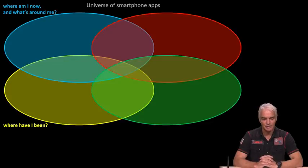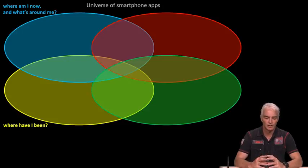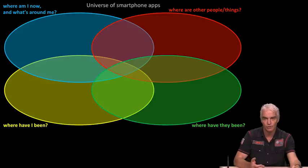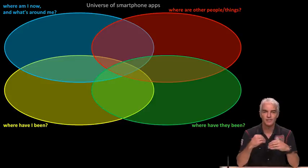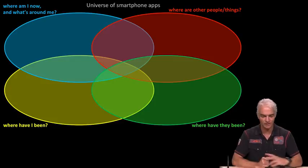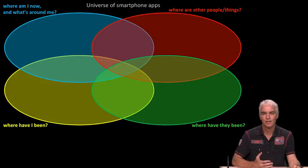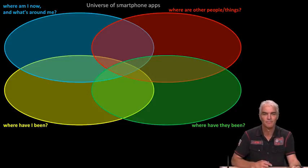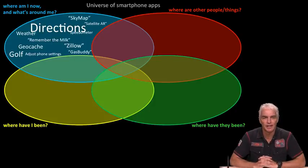Looking through the thousands of apps out there, they can all be categorized like this: they are either in the category of 'where am I now and what's around me,' 'where have I been,' 'where are other people or things,' or 'where have they been.' There are also intersections of these categories, and the intersections are where things really get interesting. I've picked out roughly 50 different apps to give an indication of the variety available.